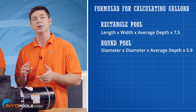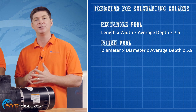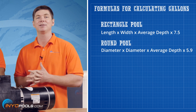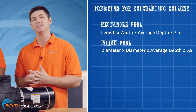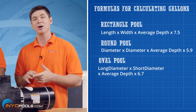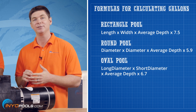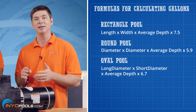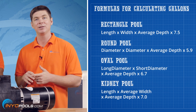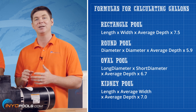For the round pool, you go diameter times diameter times average depth times 5.9. For oval pools, longest diameter times shortest diameter times average depth times 6.7. And for kidney pools, length times average width times average depth times 7.0.